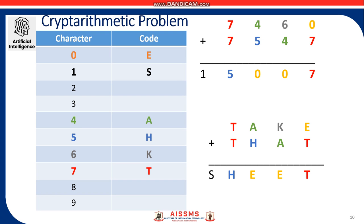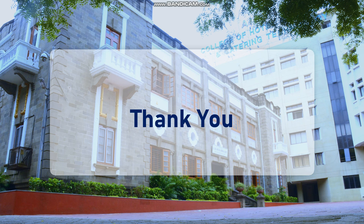So the possible combinations of K, A, H, T that were checked are as seen in this table. We see that for this particular cryptarithmetic problem of TAKE plus THAT is equal to SHEET, we have assigned 0 for E, 1 for S, 4 for A, 5 for H, 6 for K, and 7 for T. So we see that all the alphabets have been assigned unique numbers. In this way, cryptarithmetic problem is solved. Stay tuned for many such videos on important concepts of the subject Artificial Intelligence. Thank you for watching.